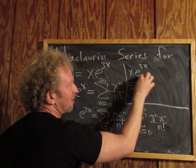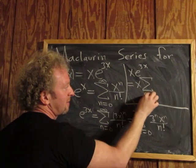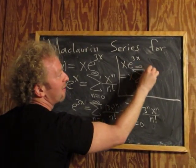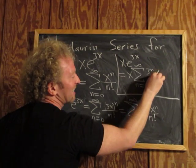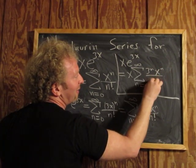x times this infinite sum as n goes from 0 to infinity of 3 to the n times x to the n over n factorial.